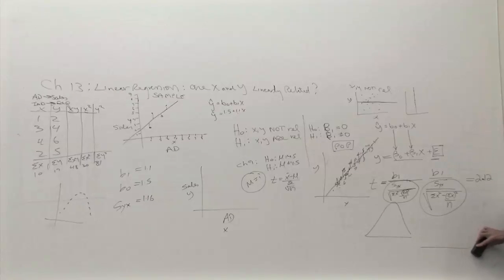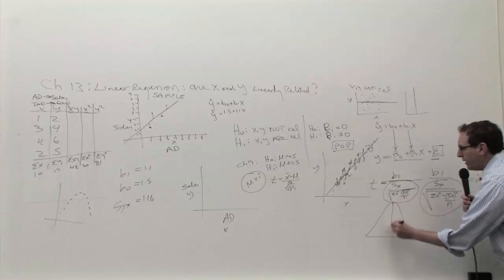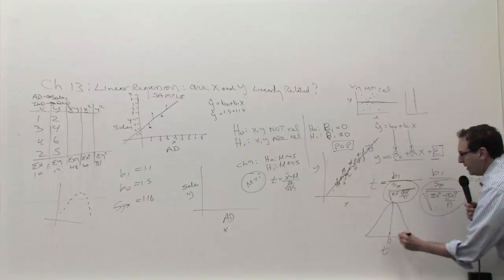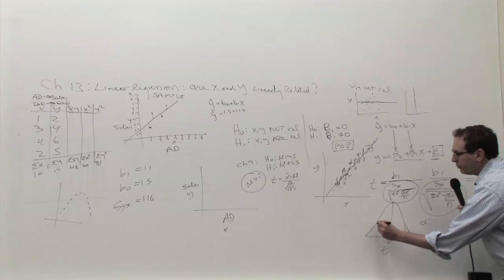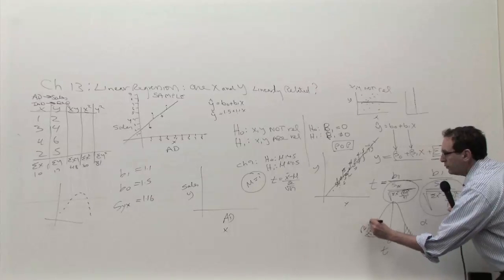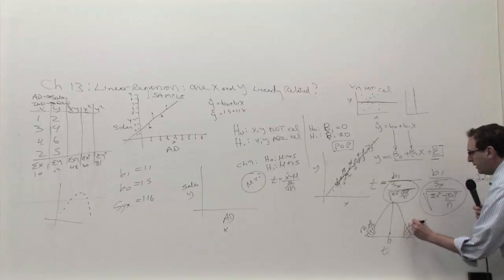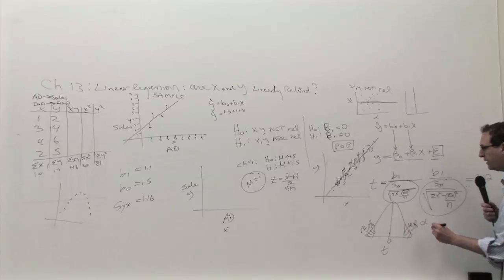Step number three. Step number three. You make a T-diagram. You chop the alpha in half and make it reject. Just exactly the same as the previous chapter 9 or other chapters. Reject H0 if it's really big or small. If it's close to zero, you accept H0.